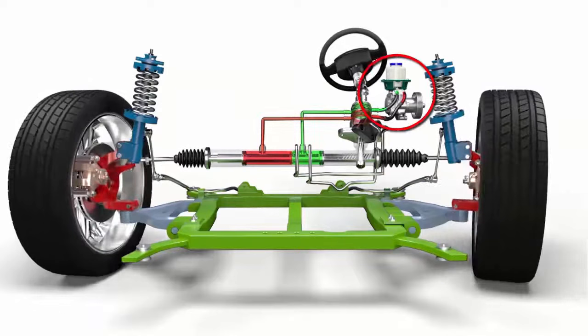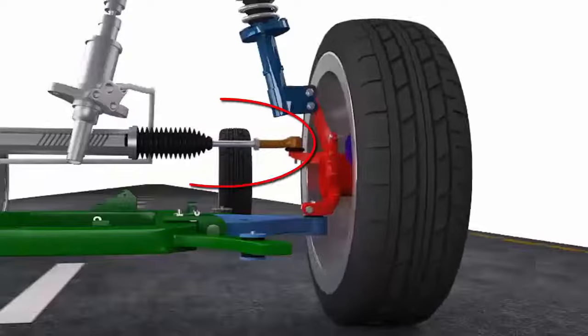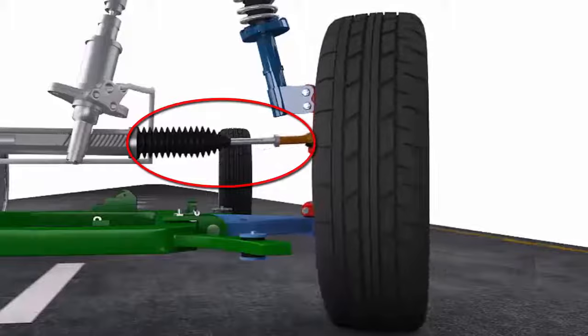A small valve in the steering rack directs the pressurized fluid according to which direction the driver is trying to turn the wheel. Tie rods and tie rod ends connect the steering rack and pinion to the wheels on the vehicle.